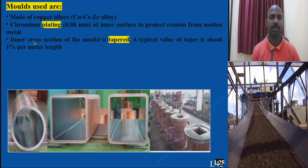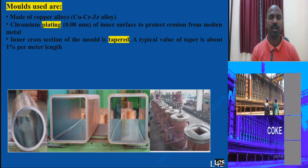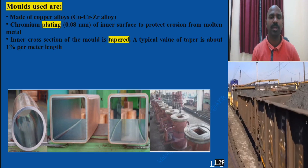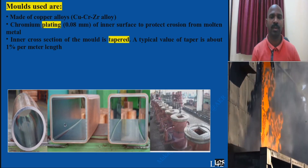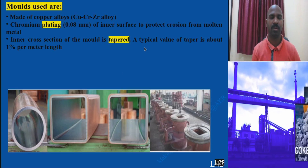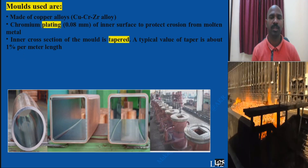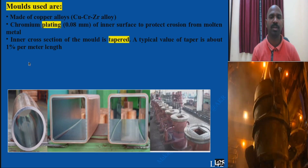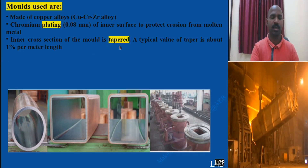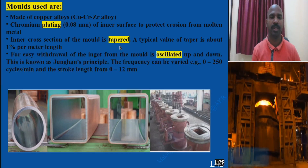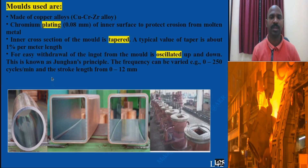The inner cross-section is provided with tapering. The top surface area and the inner bottom area are completely different. A typical tapering of around 1% is given in one meter length — meaning 1% of the total volume space is provided with tapering in a one-meter length mold.